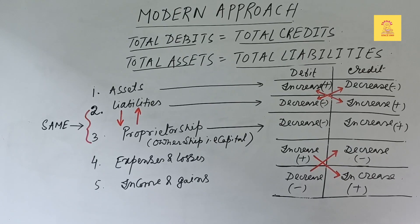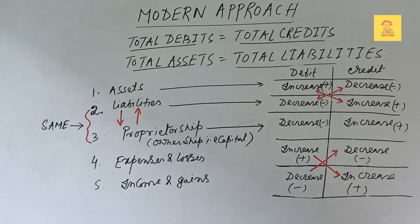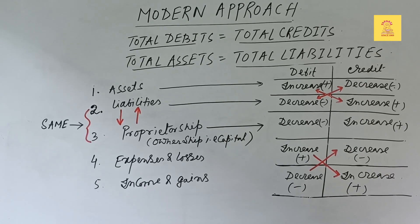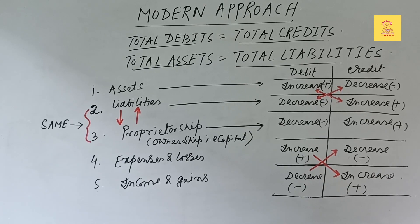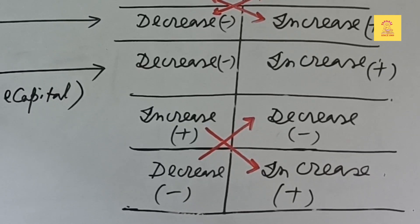Liabilities here refer to external liabilities. Another form of liability is proprietorship, which is the internal liability — also called ownership or capital. Proprietorship follows the same debit and credit rules as liabilities: a decrease in proprietorship is debited and an increase is credited. For expenses and losses, an increase is debited and a decrease is credited. For income and gains, a decrease is debited and an increase is credited.